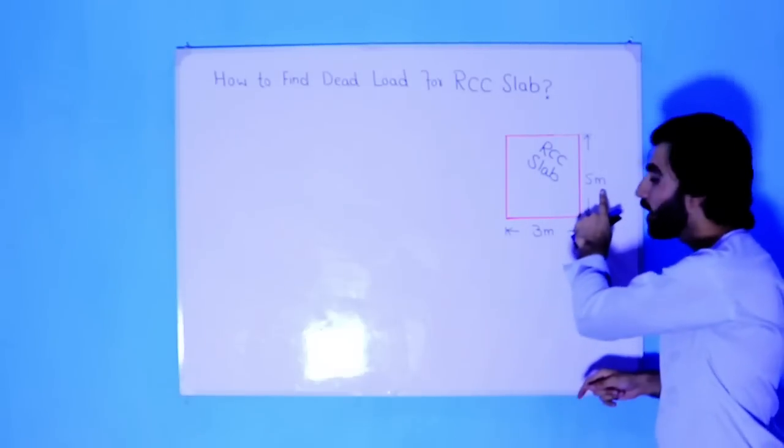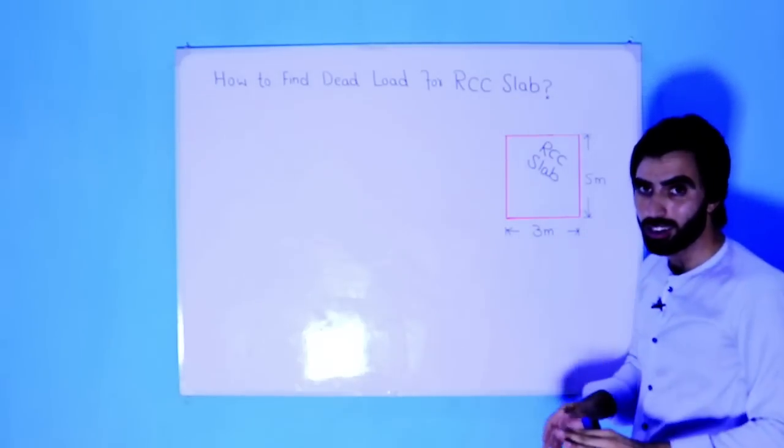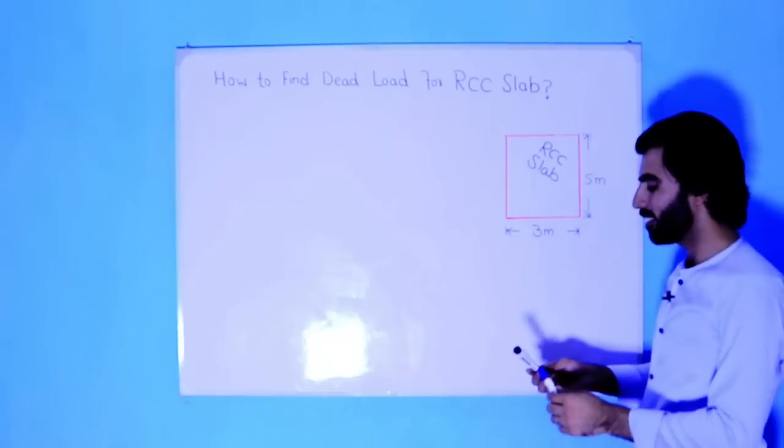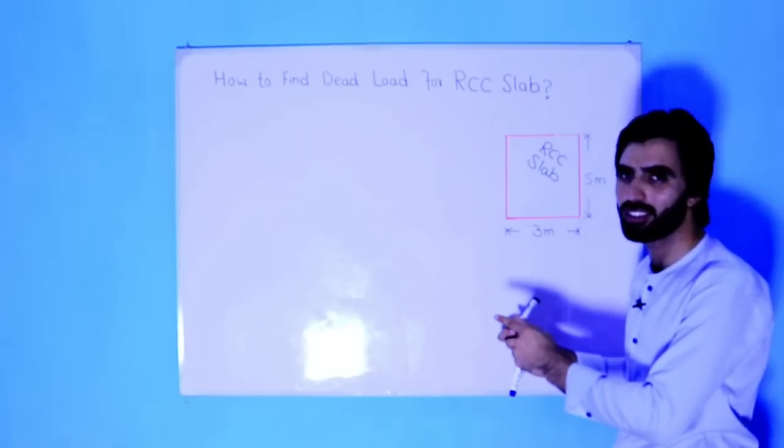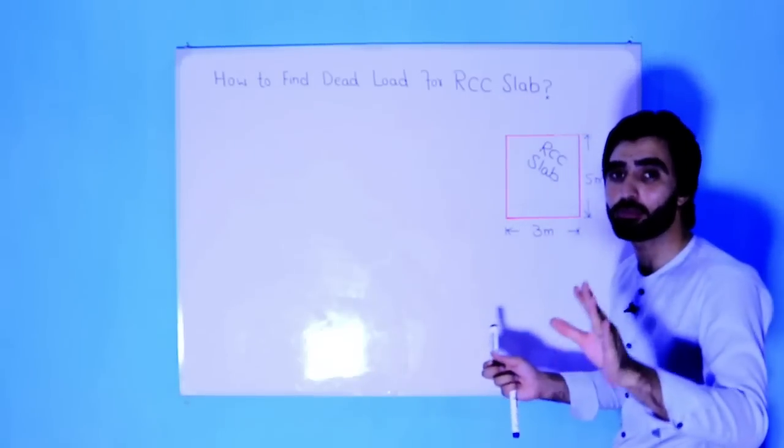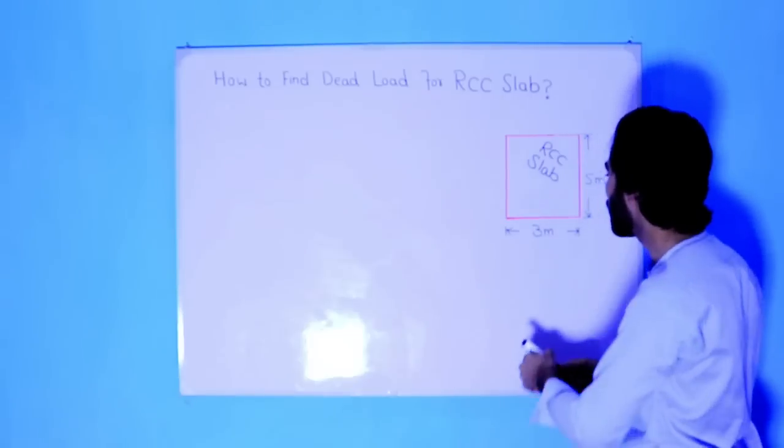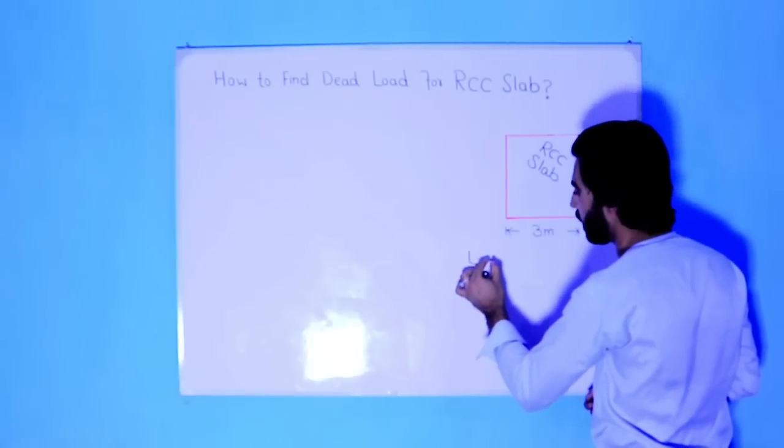The length is 5 meters, width is 3 meters. But the thickness, what should be the thickness? Okay, 15 centimeters, which means 0.15 meter. So length is 5 meter, width is 3 meter.